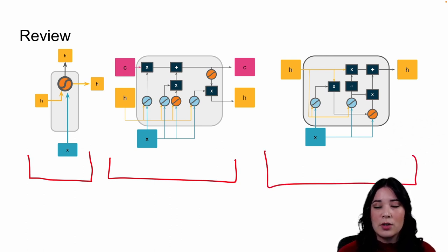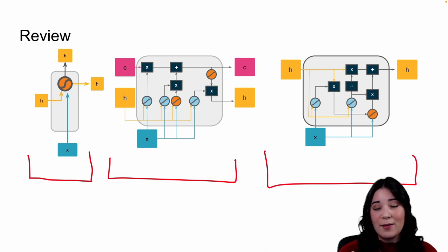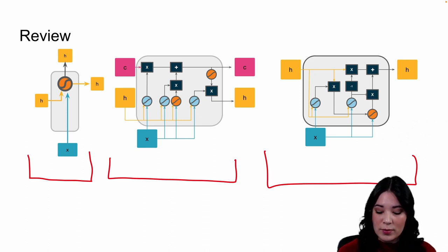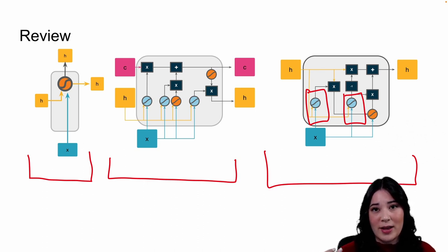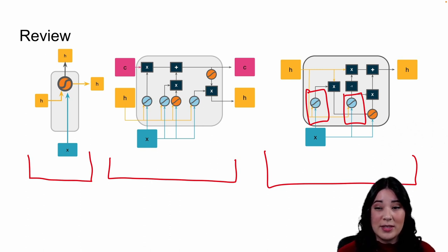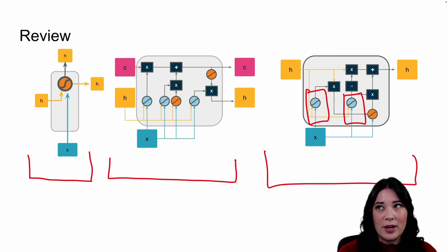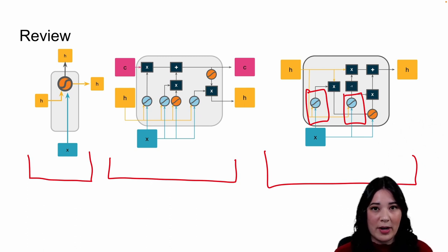The GRU is a much simpler architecture than the LSTM but performs a similar function. In the GRU we no longer have a cell state, and we have fewer gates — instead of forget, input, and output, we just have two: the reset gate and the update gate. Together, these two gates decide how much of the previous hidden state to use in the update and how much of the new hidden state should be affected by that update. GRUs, being a simpler architecture with fewer parameters, can often be a little simpler and easier to train than an LSTM. However, there's no consensus about which is better, and different situations may favor one over the other.